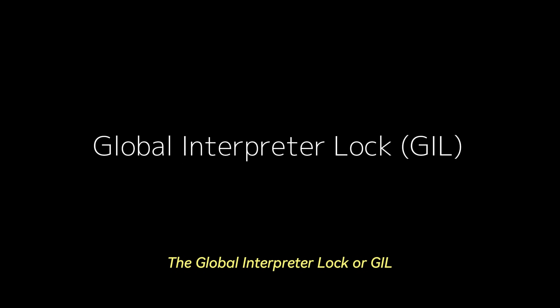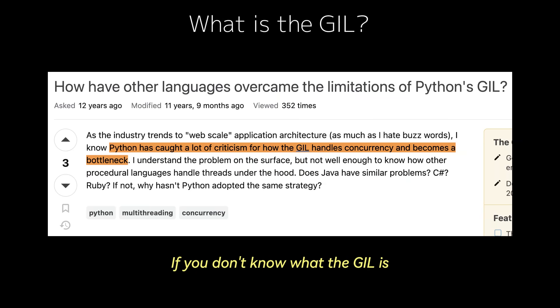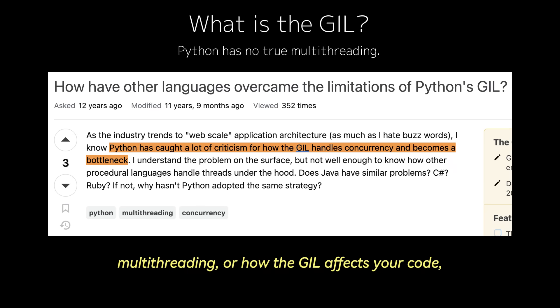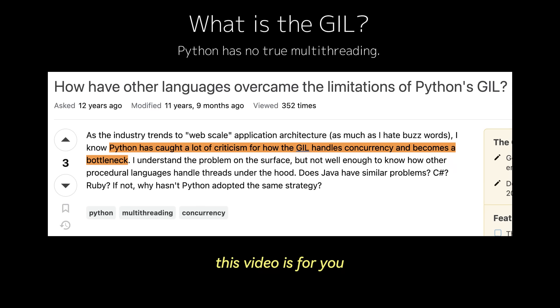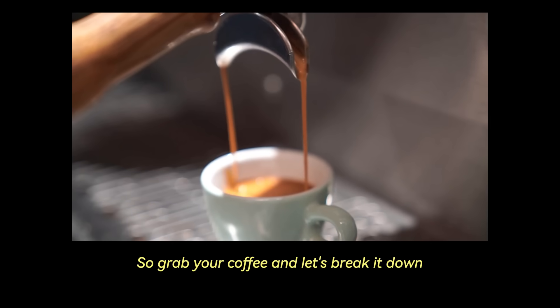Global interpreter lock, or GIL. If you don't know what the GIL is, or if you've ever wondered why Python struggles so much with true multithreading, or how the GIL affects your code, this video is for you. So grab your coffee and let's break it down.